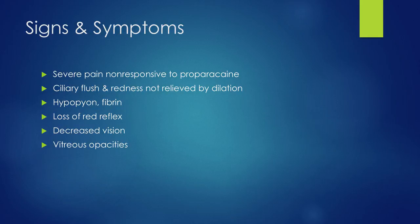The signs and symptoms that lead you to suspect endophthalmitis are pain that is unresolved with topical anesthetic, or redness of the eye, especially around the limbus, which is called ciliary flush. If there's severe injection or ciliary flush that's not resolved with dilating drops, that can also be a clue. Of course, decreased vision, loss of the red reflex, fibrin formation in the anterior chamber, hypopion, vitreous opacities — all of those can point you towards a diagnosis of endophthalmitis.